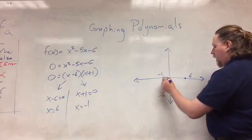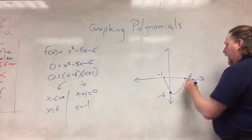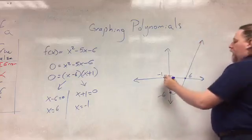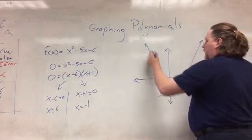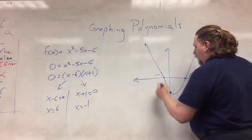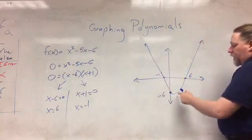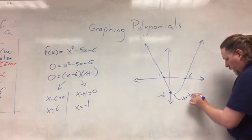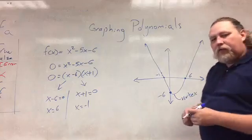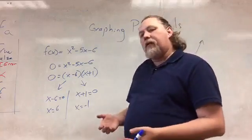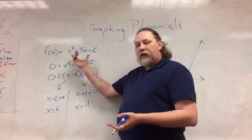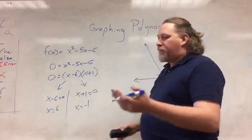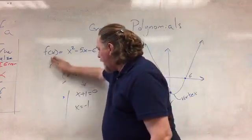Now I can do a little connect the dots. I already knew as I go to the right the graph goes up, and as I go to the left the graph goes up. All that leaves me with is figuring out the vertex. In Algebra 2, you studied completing the square to turn this into a perfect square problem, and that's the easy way to find the vertex. We're going to do that right now.